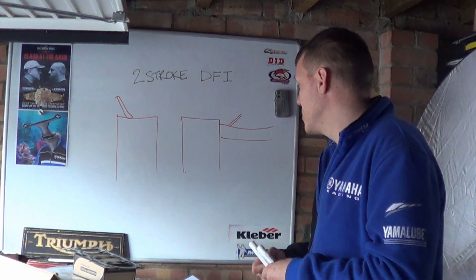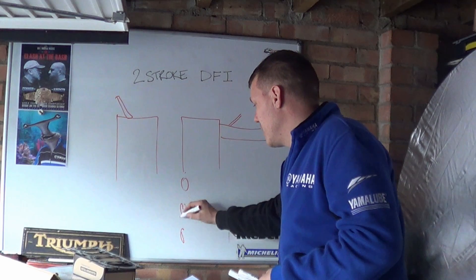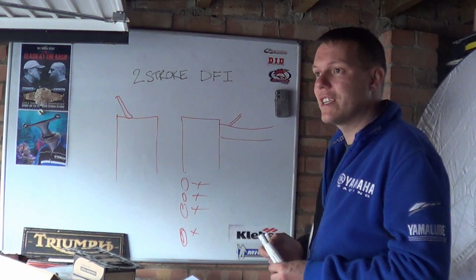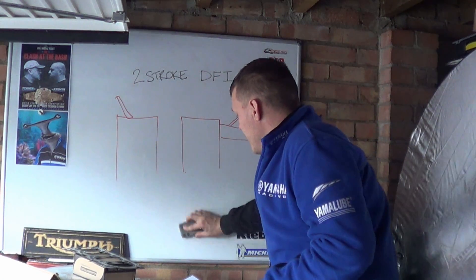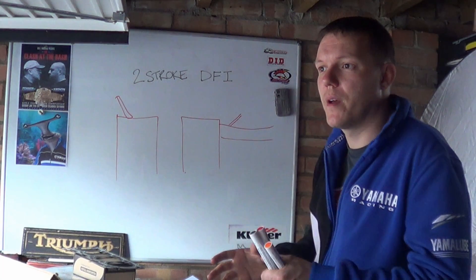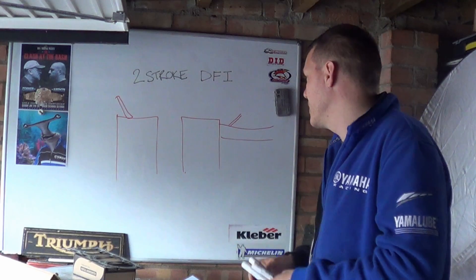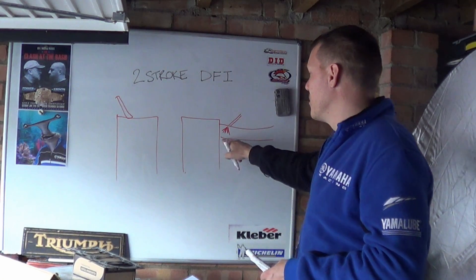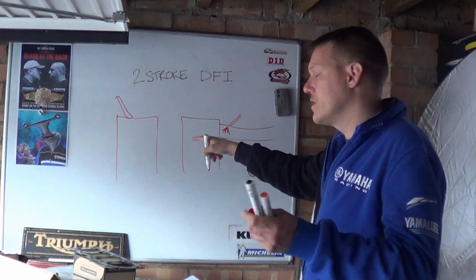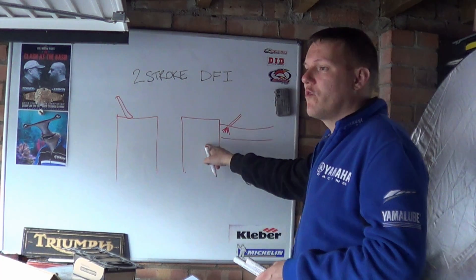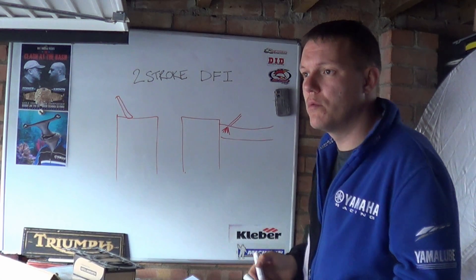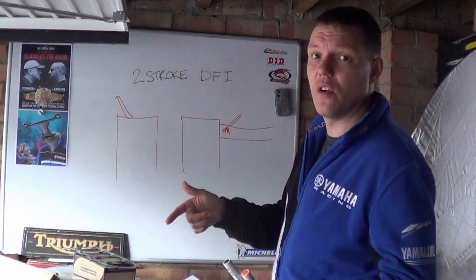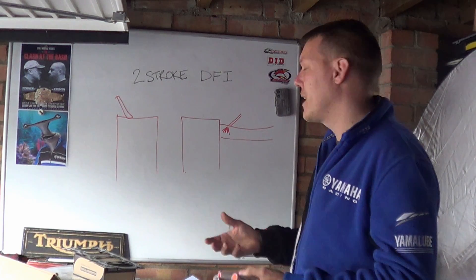Then we went to multi-point injection — same basic layout but with an injector per cylinder, giving much better control and fuel metering per cylinder. Indirect injection sprays and atomises fuel in your port, usually on the back of the valve, and when the valve opens it lets fuel in — that's for a four-stroke. For a two-stroke with injection, it generally sprays into the manifold where the reeds are, and when air is drawn in it takes the fuel with it — same kind of principle.